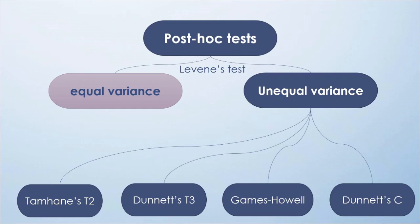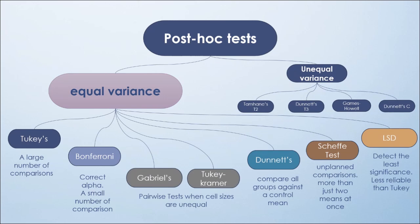In this mind map, we have also examples of tests with equal variance. Each test has characteristics and preference during testing, especially related to sample size, pairing, control group, alpha correction, and cell size equality.